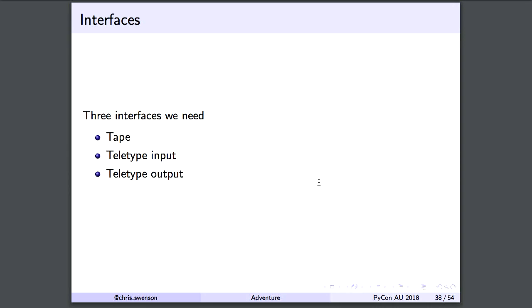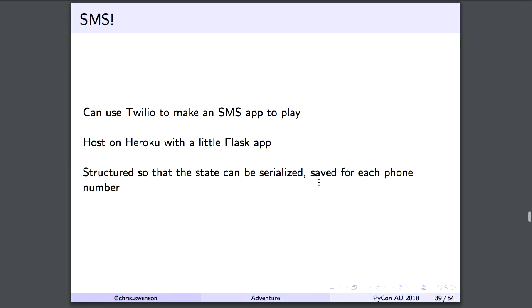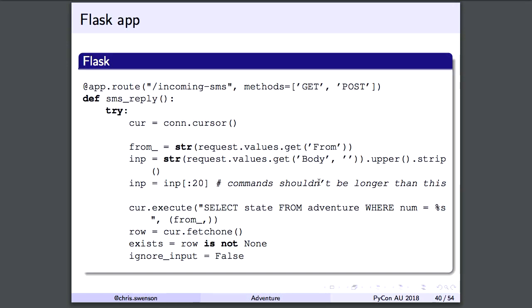The three interfaces we really need are: tape, teletype input, and teletype output. Tape is just a fixed data file we read in. Teletype input could be anything like SMS, and teletype output could also be SMS — or a browser interface. I decided to use SMS, so I wrote a little Flask app that runs on Heroku. The internal state of the interpreter is serialized and saved per each phone number so that you can continue playing the same game over and over again.